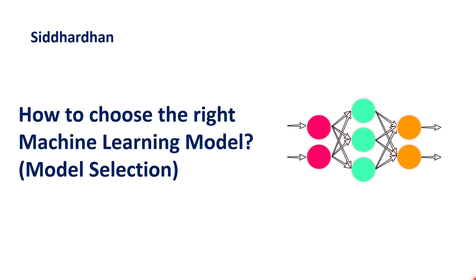Hello everyone, I am Siddhartham. Currently we are in the sixth module of our hands-on machine learning course, and this sixth module is all about machine learning models and some important concepts related to it. In today's video we are going to understand how to choose the right machine learning model for a project — this process is also called model selection. We will also be discussing a technique called cross-validation, which is used to select models based on their accuracy.